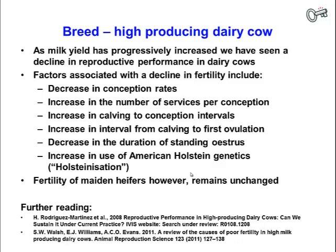Some of the factors associated with this decline in fertility include a decrease in conception rates, an increase in the number of services per conception, an increase in the calving to conception interval, an increase in the interval from calving to first ovulation, and a decrease in the duration of standing estrus. All of this has been associated with an increased use of American Holstein genetics — so-called Holsteinization of dairy herds. In spite of all these negative effects on fertility, the fertility of maiden heifers appears to have remained unchanged — it's only after calving that we're seeing this decline in reproductive performance.